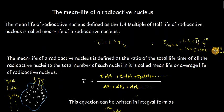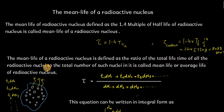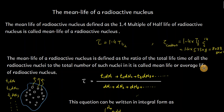Our second definition: the mean life of a radioactive nucleus is defined as the ratio of the total lifetime of all the radioactive nuclei to the total number of such nuclei. This is called the mean life or average life of a radioactive nucleus.